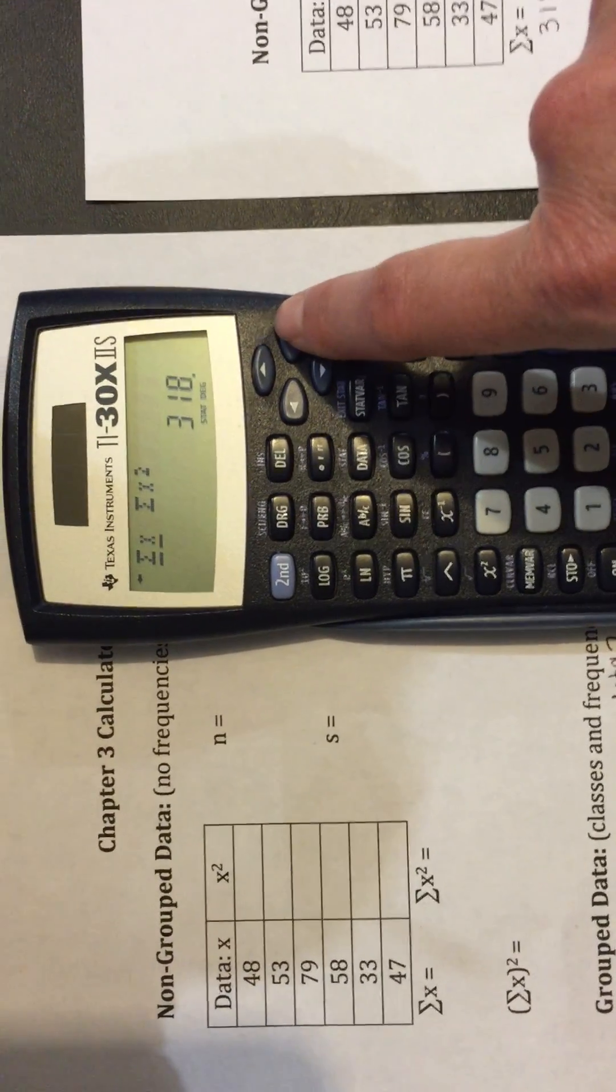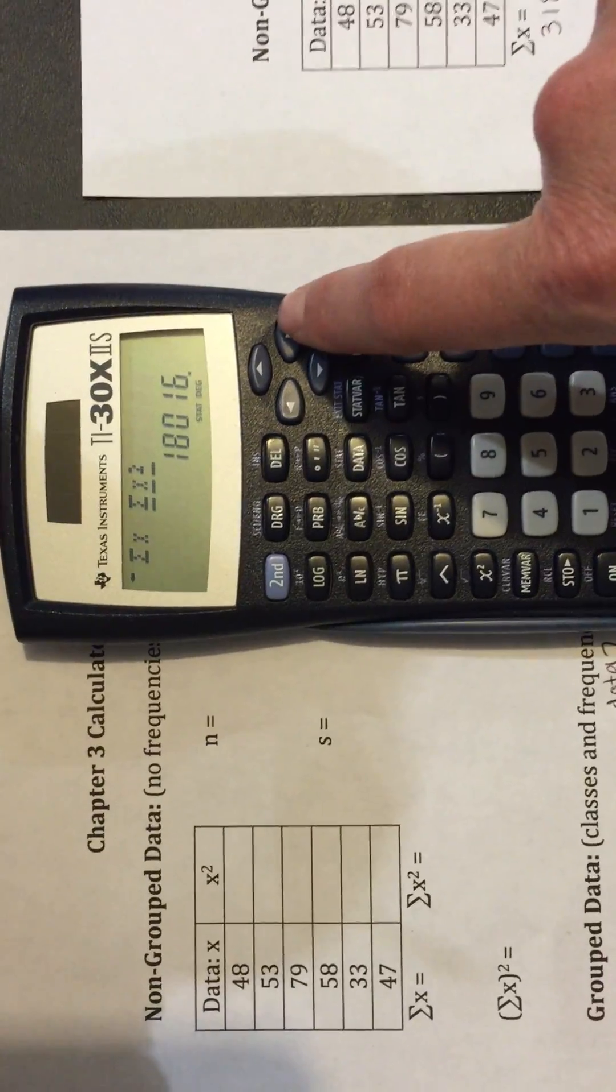Keep using your arrow to find sum of the X's and sum of the X's squared.